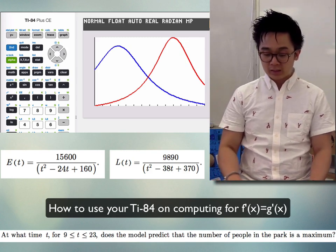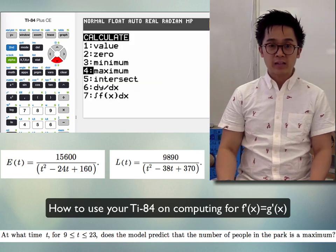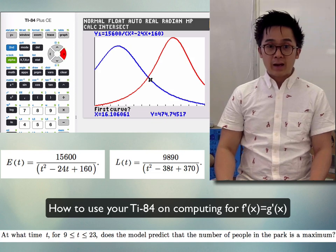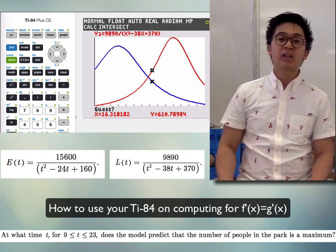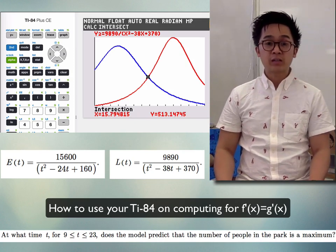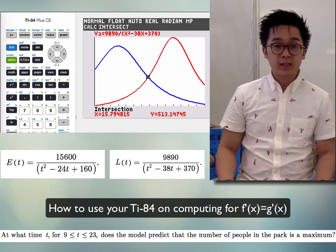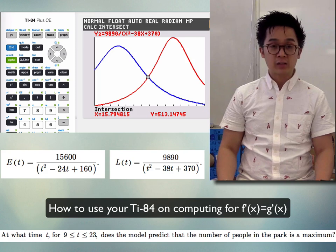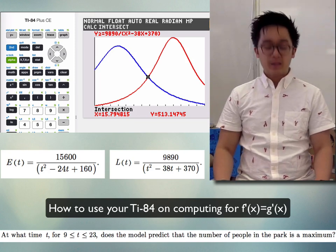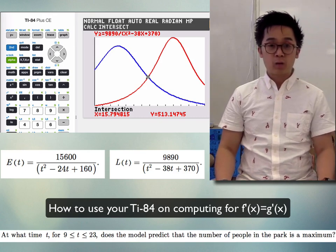To find the point of intersection, push 2nd→TRACE to go to CALC and select Intersect (option 5). Select the blue graph and the red function, push Enter, and the TI-84 will give us the actual point of intersection of our two derivative functions, which is 15.7948. This is the exact critical number we need to compute the maximum number of people in the park.